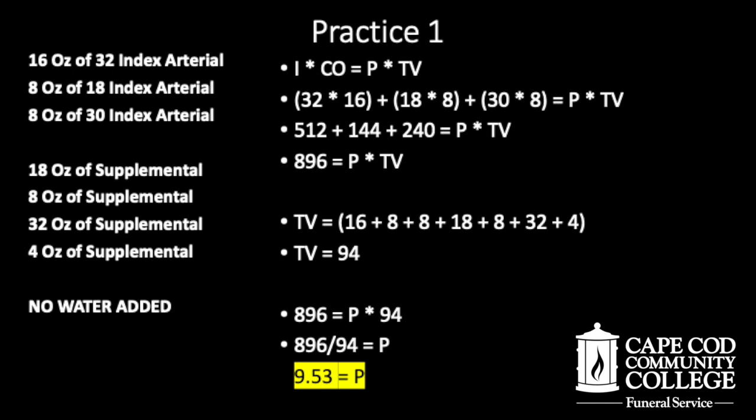Next, we add together the concentrated ounces of everything we put into this tank. We have 16 ounces of an arterial, 8 ounces of an arterial, 8 ounces of a third arterial, and then for supplementals, we have 18, 8, 32, and 4 ounces respectively. Since no water was added to the tank and we're using a waterless embalming in this case, this is everything that makes up the total volume. So once we add these numbers together, we get 94 ounces, and 94 represents the total volume that we had in our tank prior to embalming.